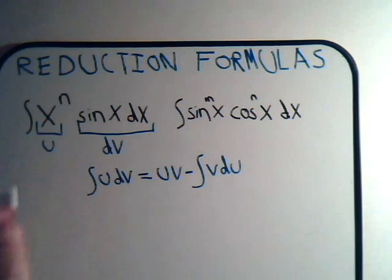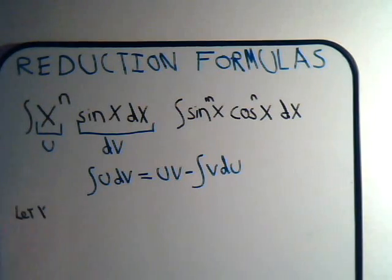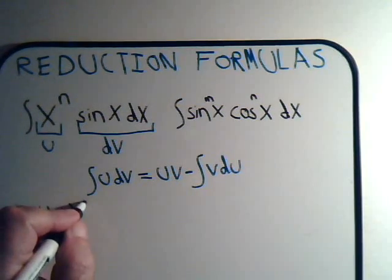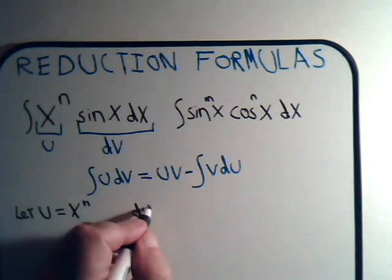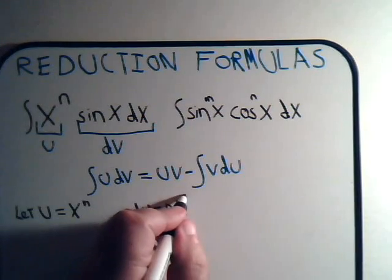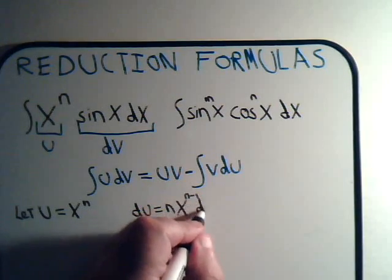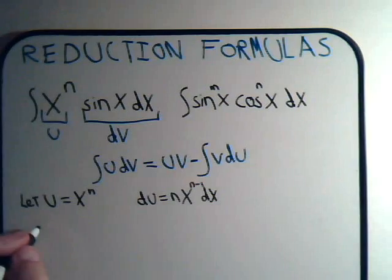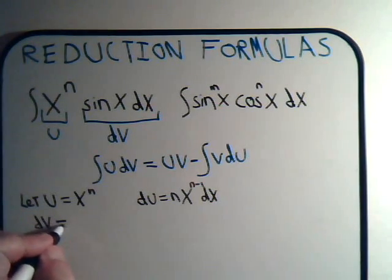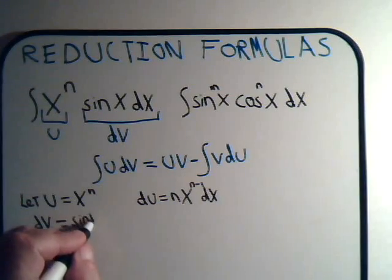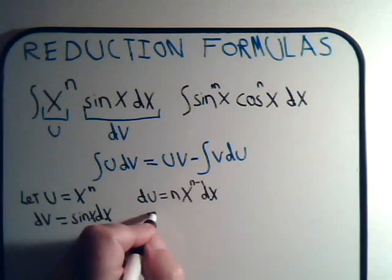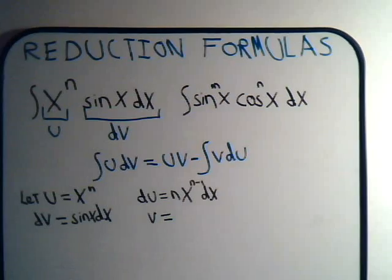So we start off. Let u equal x to the n. Then du equals n times x to the n minus 1, dx. And dv is the sine of x dx. So v, if we integrate dv, we get minus the cosine of x.